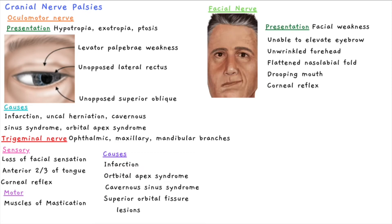The next nerve is the facial nerve, which controls facial muscles. Presentation includes facial weakness. When conducting a cranial nerve exam, the patient will not be able to elevate their eyebrows on the affected side, may have an unwrinkled forehead on one side, a flattened nasolabial fold, drooping of the mouth, and loss of the motor component of the corneal reflex.